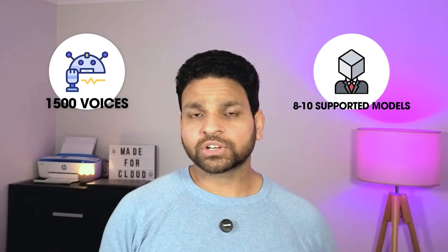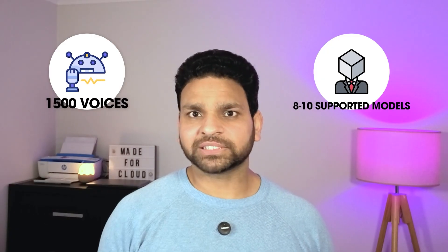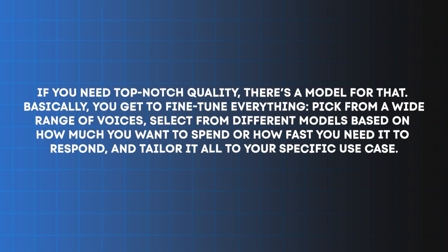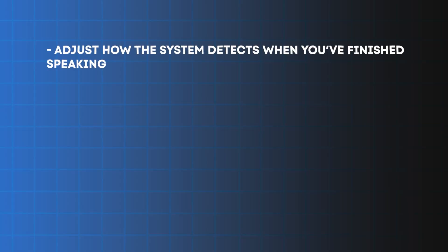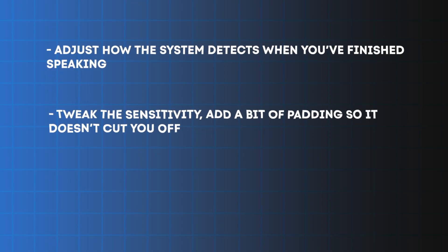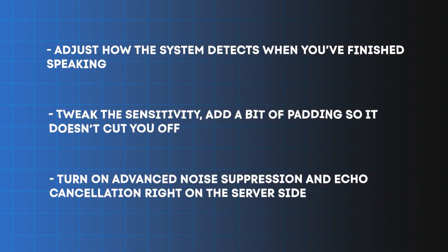With the Voice Live API you get support for eight to ten different models, so you can pick the one that fits your need and budget. There are advanced features: you can adjust how the system detects when you've finished speaking, tweak the sensitivity, and add padding so there's an overlap between when the AI is talking and when you start talking. You can also turn on advanced noise suppression and echo cancellation directly on the server side, so the AI won't get confused by its own voice.